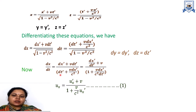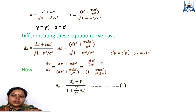Dividing, we get (dx-dash + v·dt-dash) / (dt-dash + v·dx-dash/c²). The √(1 − v²/c²) terms cancel from both equations. Taking dt-dash as common factor, this simplifies to (dx-dash/dt-dash + v) / (1 + v·(dx-dash/dt-dash)/c²). Since dx/dt = Ux and dx-dash/dt-dash = Ux-dash, we get Ux = (Ux-dash + v) / (1 + v·Ux-dash/c²).